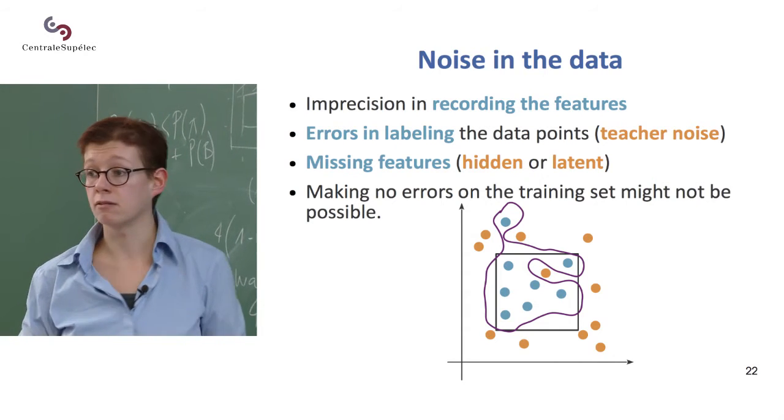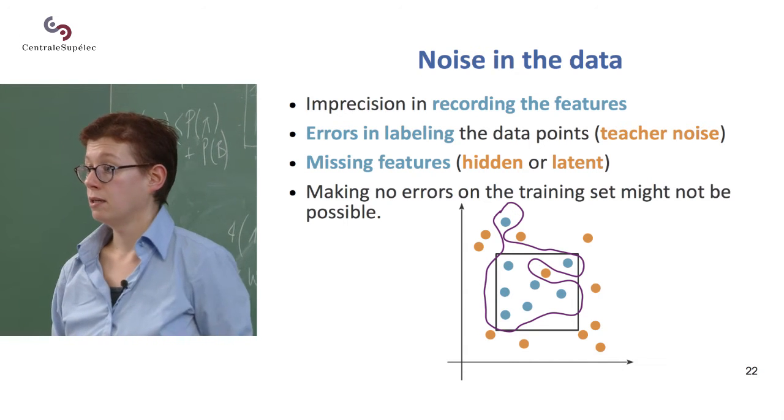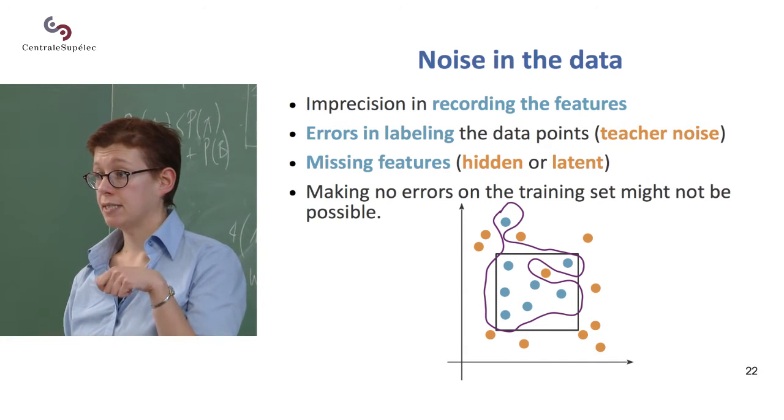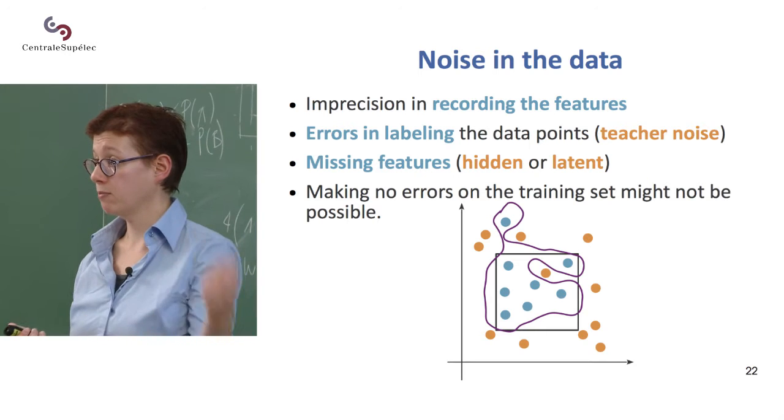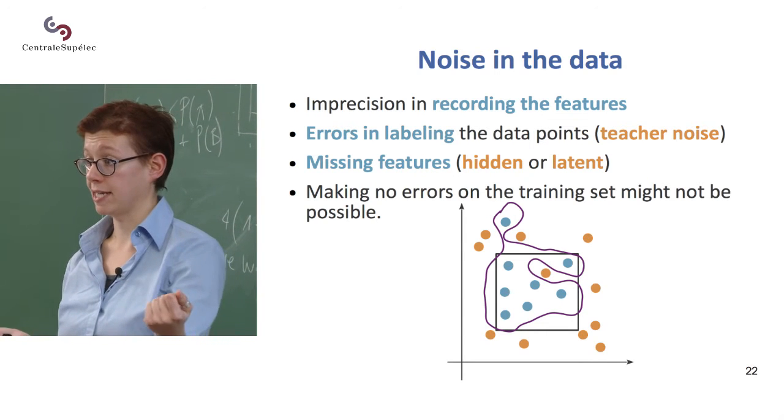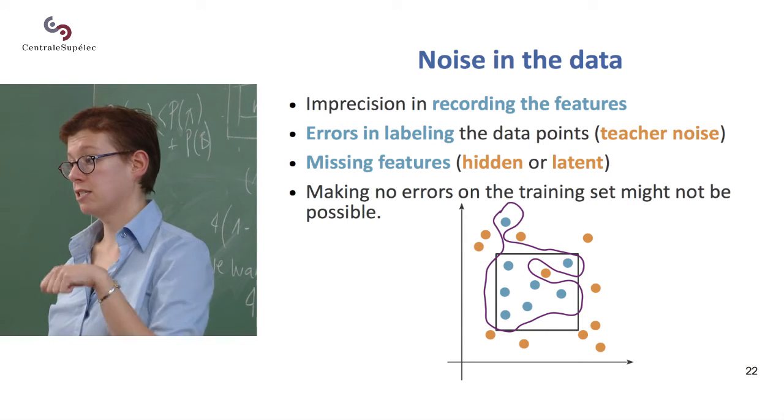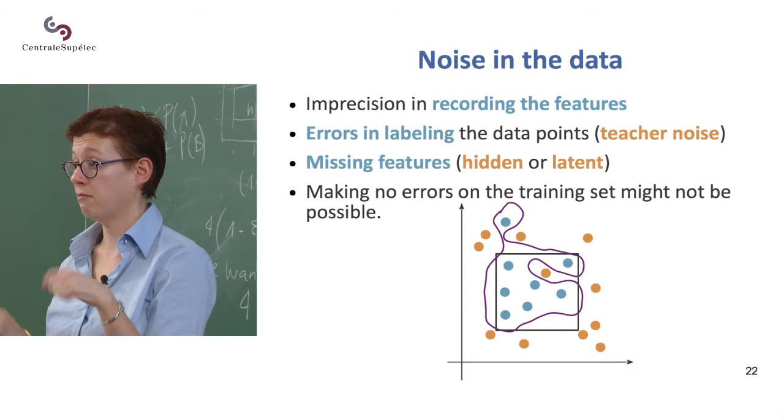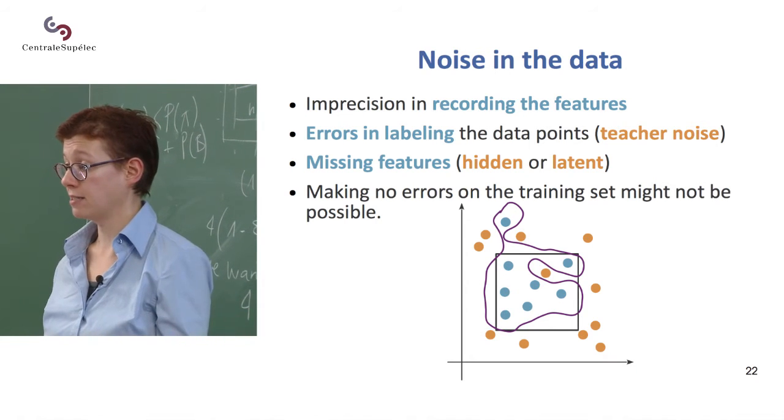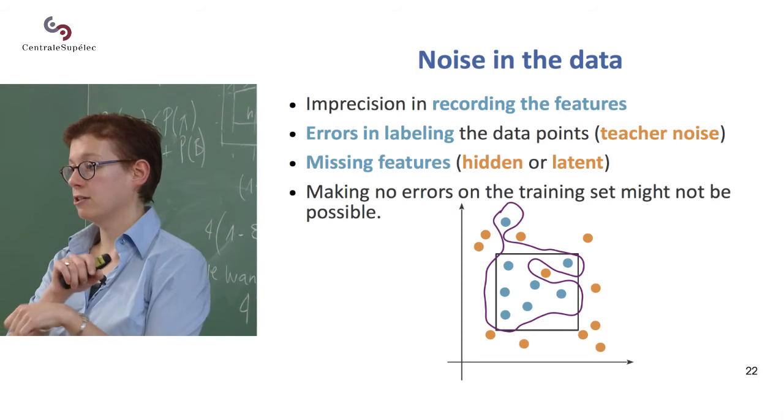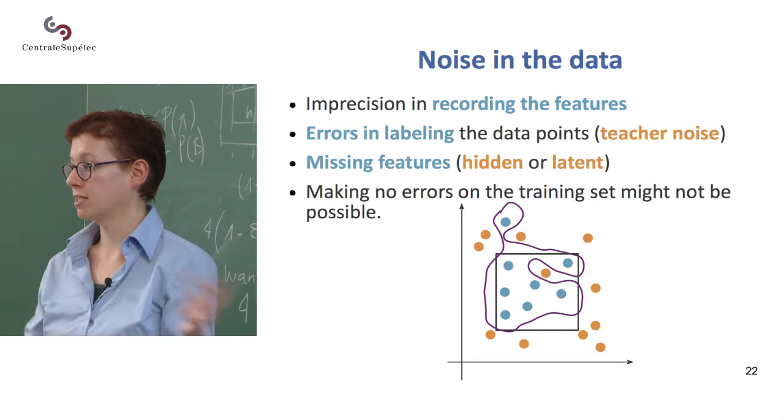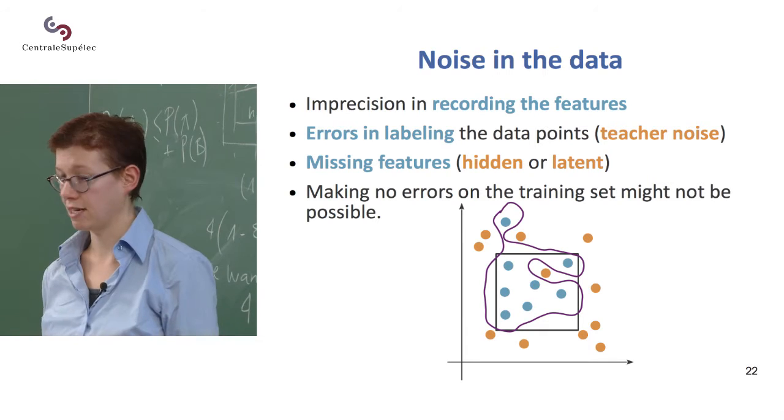So we often talk about hidden or latent variables, which are the true variables that explain at the same time the label, so say whether someone has cancer, and the features you measure. So the fact that they have this gene very expressed, but the link might not be direct and which is why you have some fuzziness that appears.